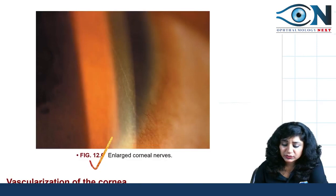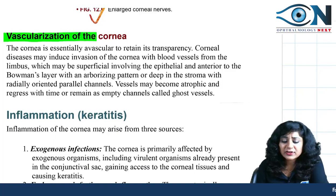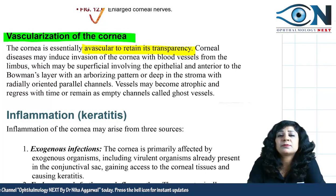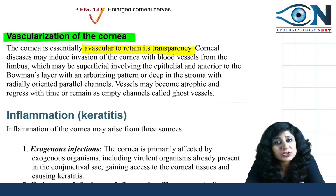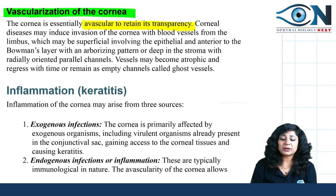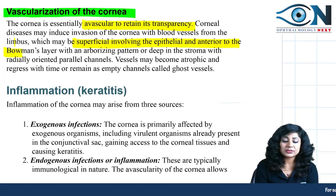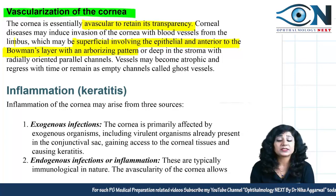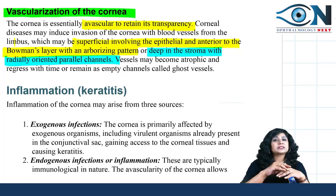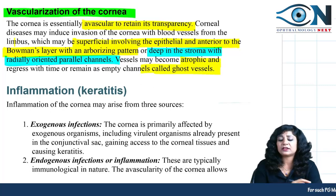Vascularization of the cornea is important when solving clinical case scenarios. The cornea is normally avascular to maintain transparency, but corneal diseases may induce invasion of blood vessels from the limbus. Superficial vascularization, involving the epithelium anterior to Bowman's membrane, shows an arborizing pattern. Deep vascularization in the stroma shows a radial arrangement. Vessels may become atrophic and regress, or remain as ghost vessels.